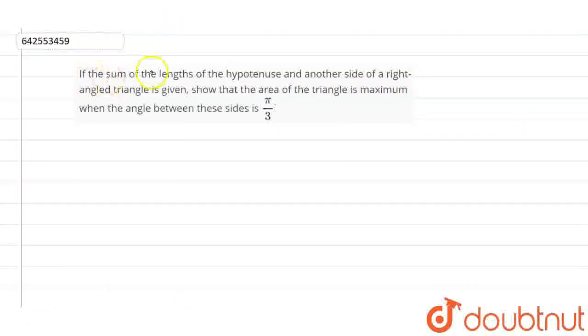Hello guys, we have: if the sum of the lengths of the hypotenuse and another side of right triangle is given, show that the area of triangle is maximum when the angle between these sides is π/3.